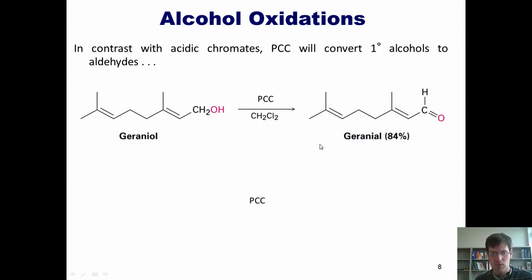Now, in contrast with acidic chromates, PCC is a weaker oxidizing reagent. Thus, when treated with PCC, primary alcohols only gain one bond to oxygen. So I can take this primary alcohol here, treat it with PCC, and I'll go up to an aldehyde, and I can stop at the aldehyde rather than going all the way to the carboxylic acid as I would with hydrogen dichromate.